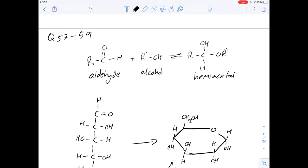Hi, I'm Carl. In this video we're going to look at questions 57 to 59 of the Green Book. This is a question about hemiacetal formation and we've been given a couple of examples here.